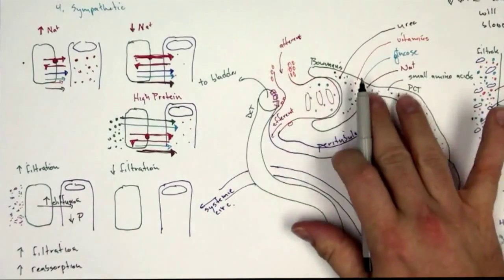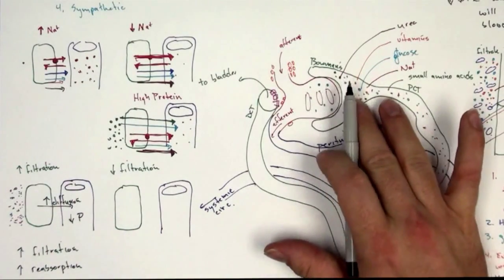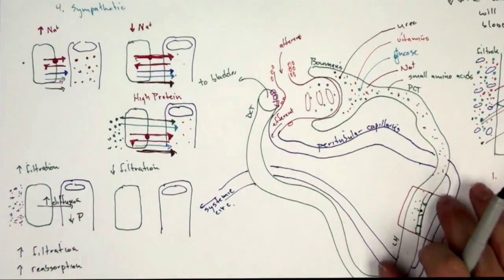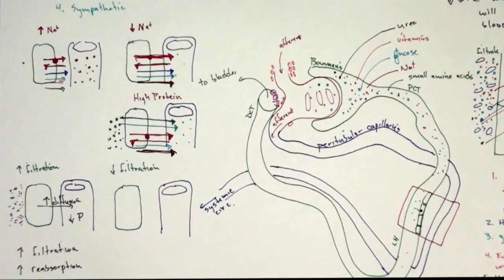So if for some reason we do force a lot of filtration, well it'll be easier for those things to make it back into the paratubular capillary. So these things kind of balance out.